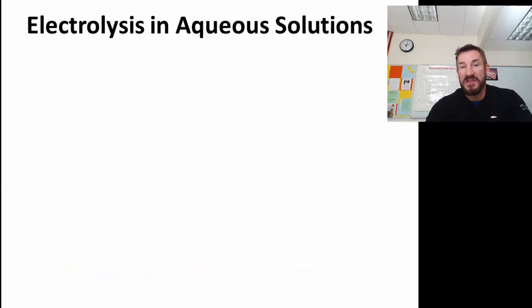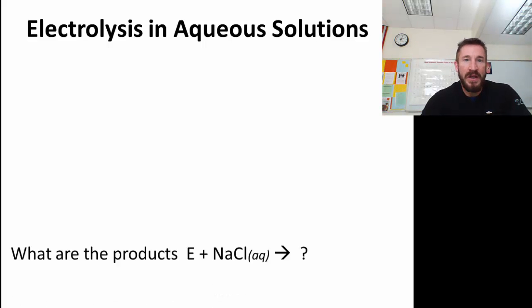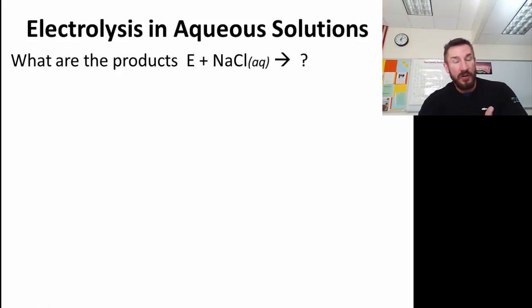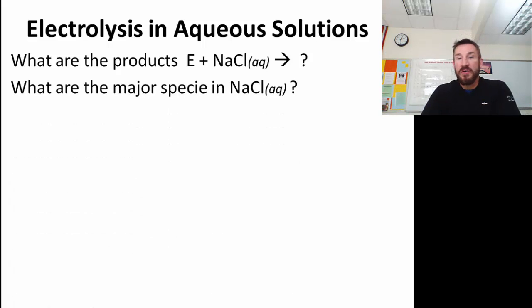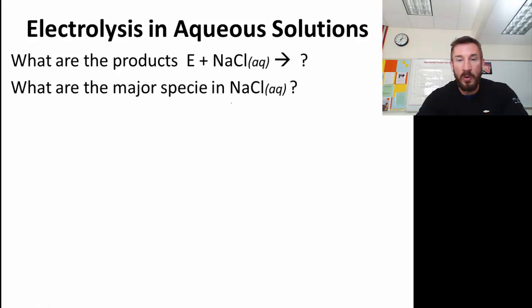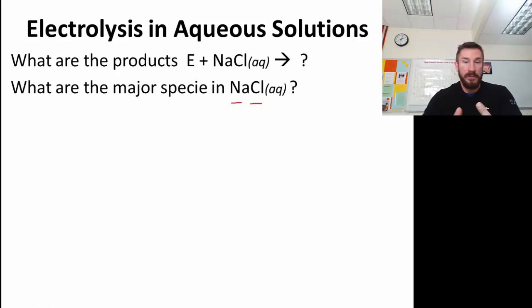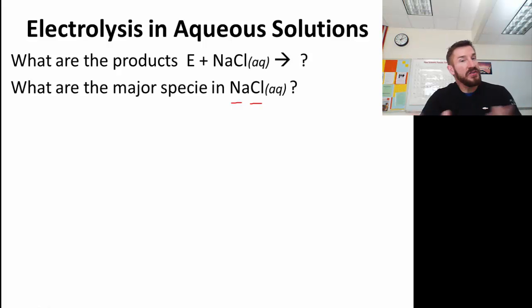Now let's talk about electrolysis in aqueous solutions. This is more common and something we'll do in the lab — you don't need the high temperatures required for a molten solution. What are the products if you were to do electrolysis with a sodium chloride solution? The first thing you do is recognize the major species: when you have a solution of sodium chloride, there are three — sodium ions, chloride ions, and water. So instead of just sodium and chlorine, we have water to be concerned about.